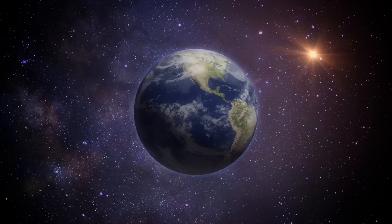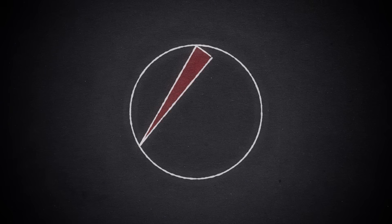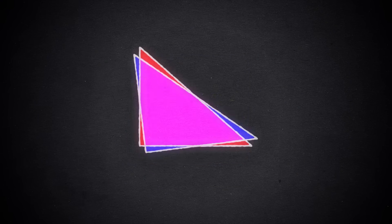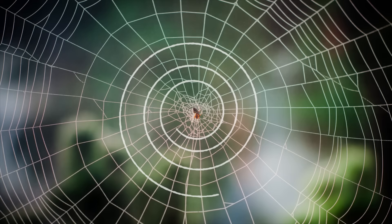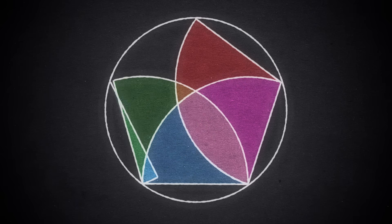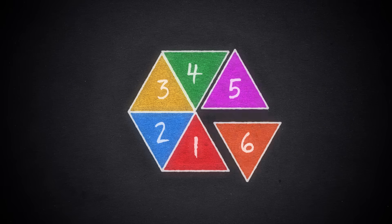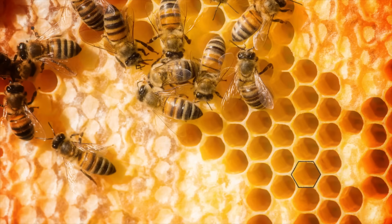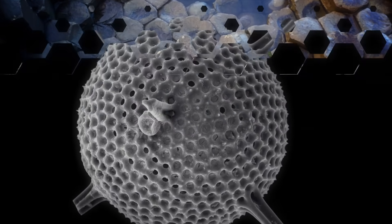Is nature a mathematician? Patterns and geometry are everywhere, but nature seems to have a particular thing for the number six: beehives, rocks, marine skeletons, insect eyes. It could just be a mathematical coincidence, or could there be some pattern beneath the pattern? Why does nature arrive at this geometry? We're going to figure that out with some bubbles, and some help from our favorite mathematician, Kelsey from Infinite Series.